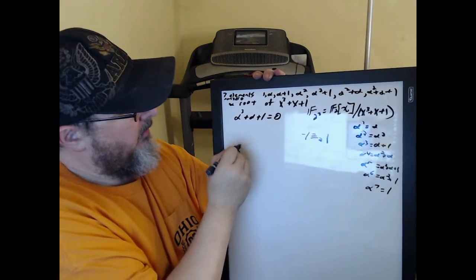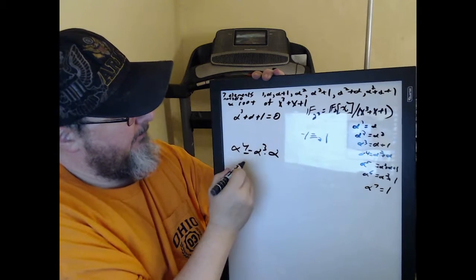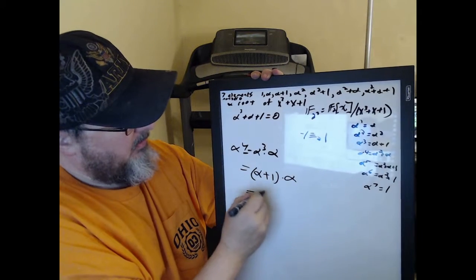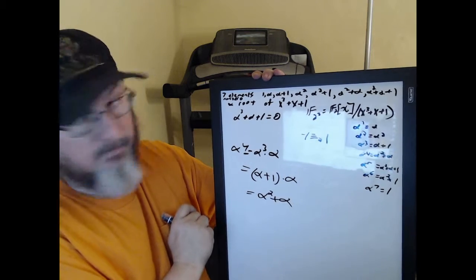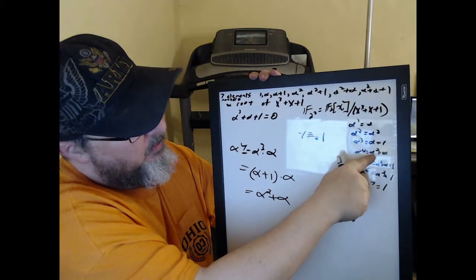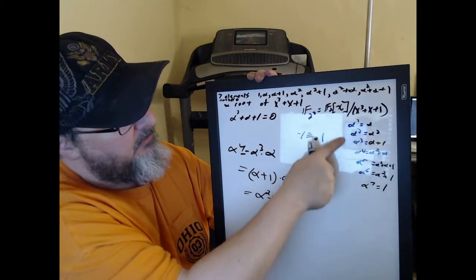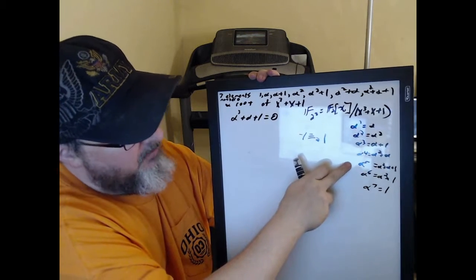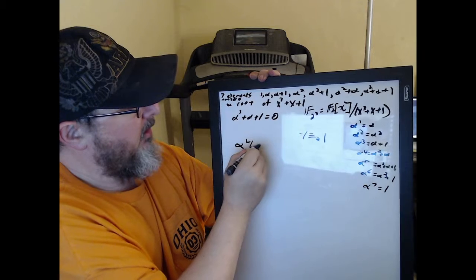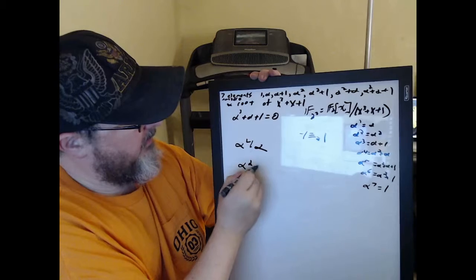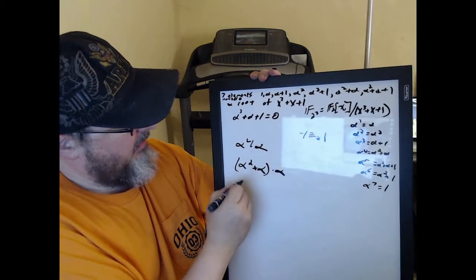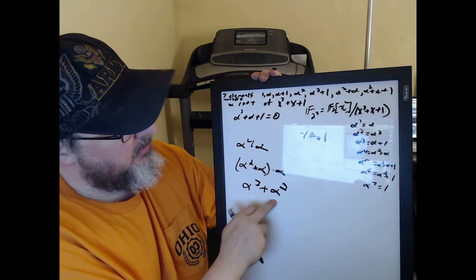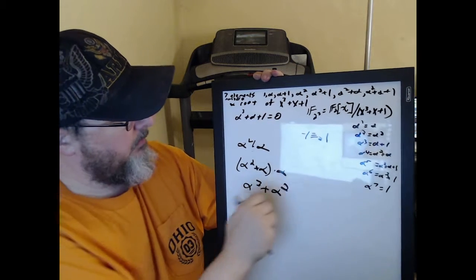Alpha to the fourth is alpha to the third times alpha. Alpha to the third was alpha plus 1, so alpha to the fourth is alpha squared plus alpha. Wait — let's try: alpha to the fifth is alpha to the fourth times alpha. Alpha to the fourth was alpha squared plus alpha, and that is alpha to the third plus alpha squared.